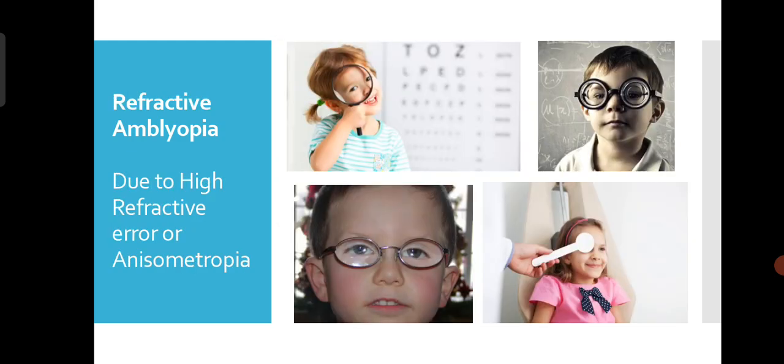For refractive Amblyopia, we need to give optimal correction — correcting both eyes properly. Refractive error should be corrected; otherwise it can develop into Amblyopia. Anisometropia can be best corrected with contact lenses in the high refractive error eye.